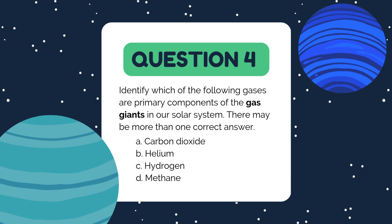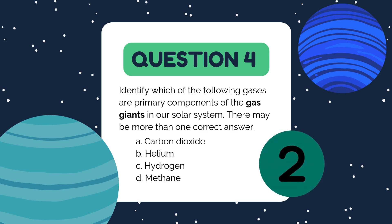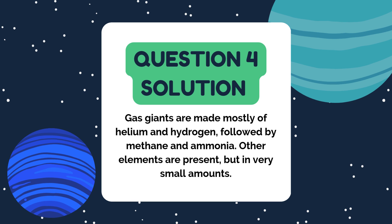Identify which of the following gases are primary components of the gas giants in our solar system. There may be more than one correct answer. A. Carbon dioxide, B. Helium, C. Hydrogen, D. Methane. The gas giants are made mostly of hydrogen and helium, making options B. Helium and C. Hydrogen correct. Trace amounts of methane and other gases like ammonia also contribute, while carbon dioxide is not a primary component. Isn't it fascinating how these colossal planets are mostly made of the simplest elements?